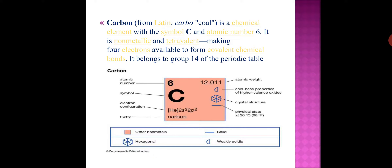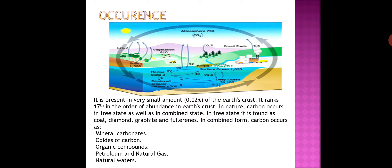Compounds obtained directly or indirectly from plants and animals are called organic compounds, and compounds obtained from minerals are called inorganic compounds. All organic compounds contain carbon, and carbon is the main element even in cellular DNA and RNA, which transfer hereditary character from one generation to the next.